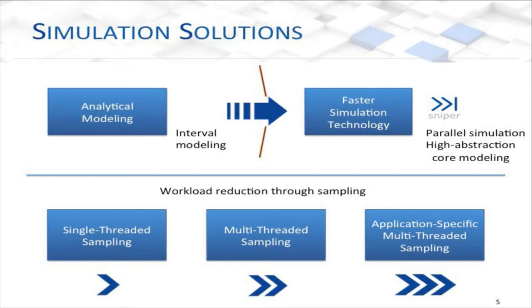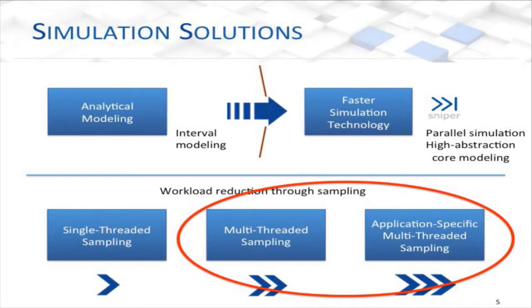Today we're going to be talking about two sampling methodologies: general-purpose multi-threaded sampling and application-specific multi-threaded sampling. I'm going to show the trade-offs and benefits for each, and show that by using these sampling methodologies, we can estimate performance and other metrics for large numbers of applications and a large number of microarchitecture combinations.